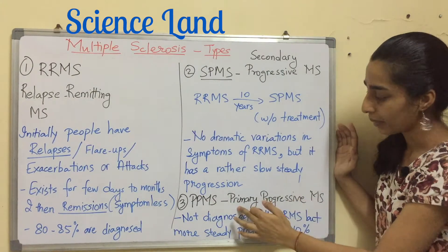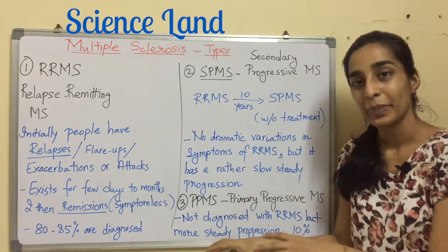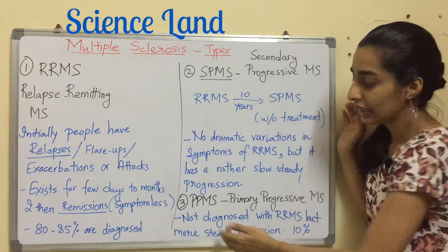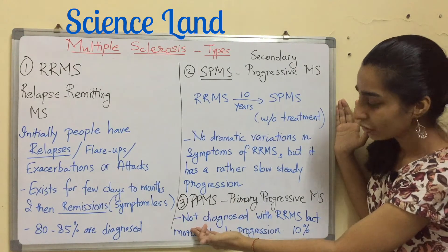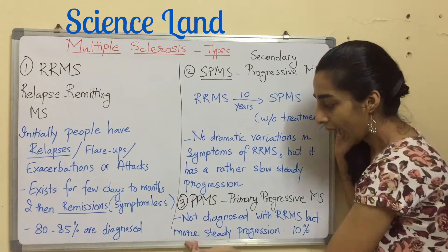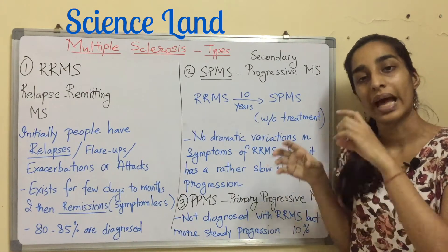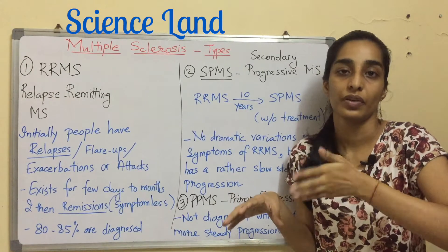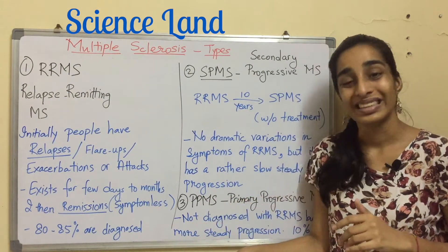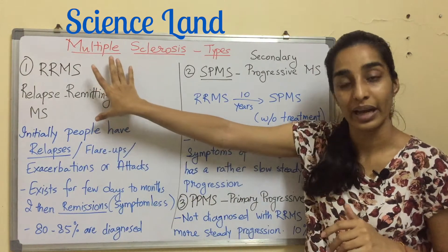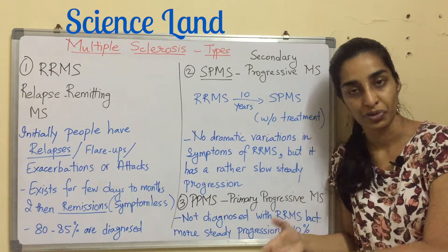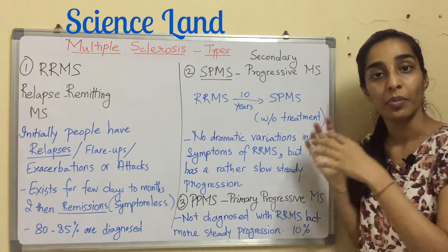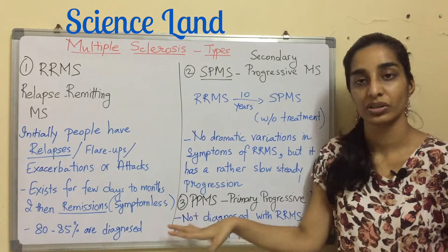The third type is PPMS — primary progressive multiple sclerosis — in which the patient is not initially diagnosed with RRMS but is directly diagnosed with PPMS. The patient has more steady progression: symptoms are present directly and there is no slow progression of the disease, but rather a constant, moderate kind of progression. There are no relapses, no remissions — directly symptoms, which then progress over time. 10% of MS patients are diagnosed with PPMS.